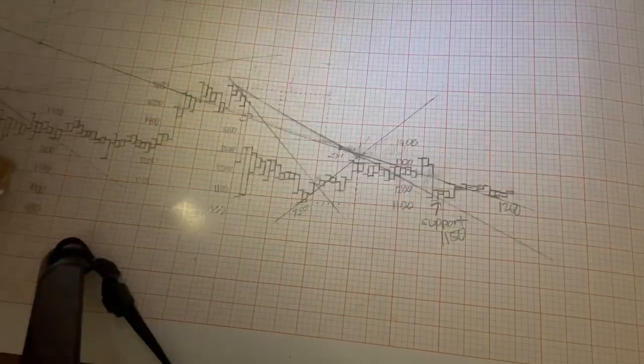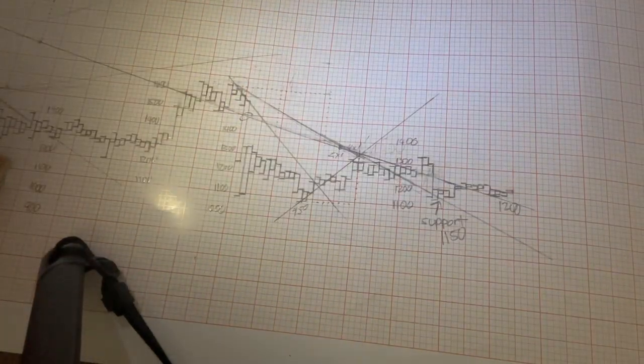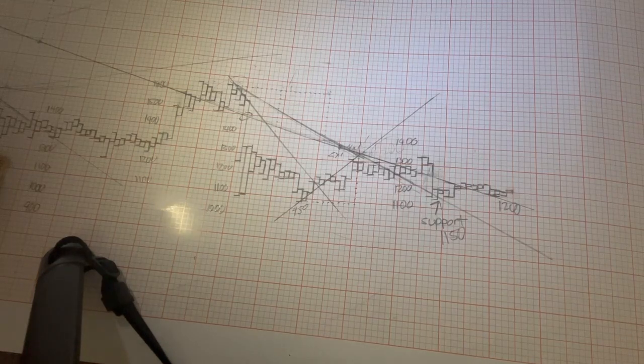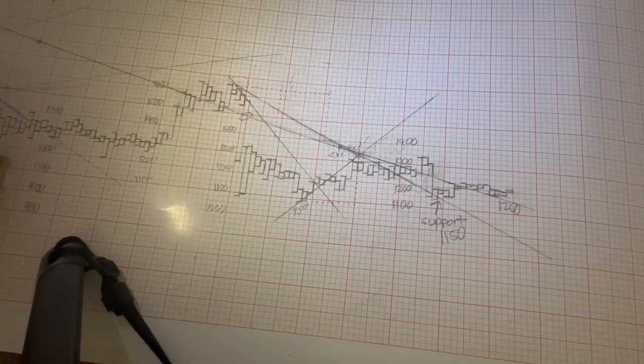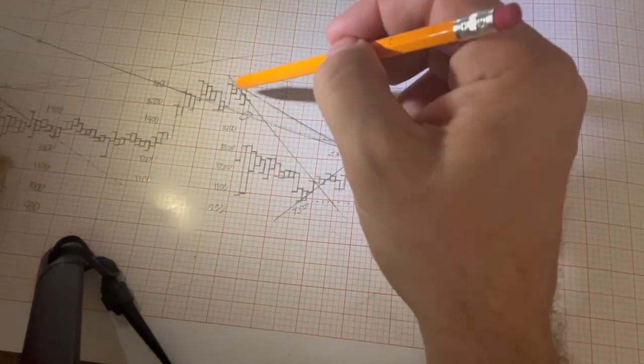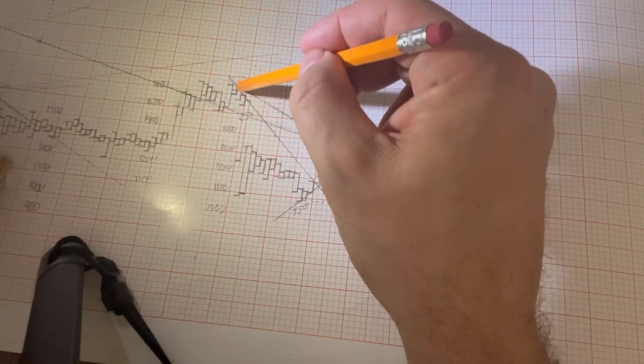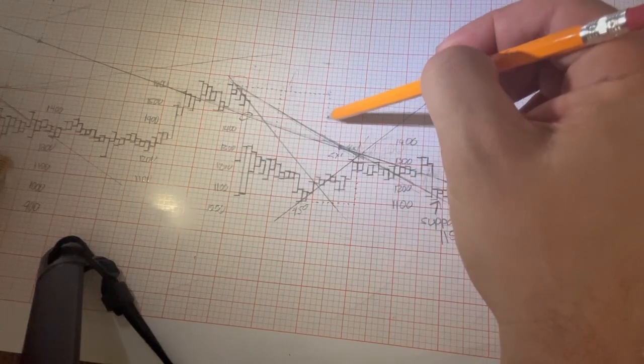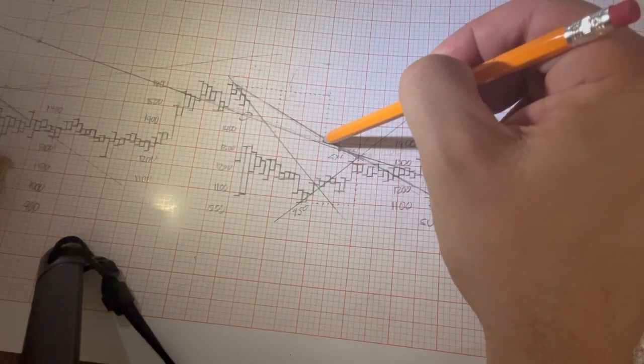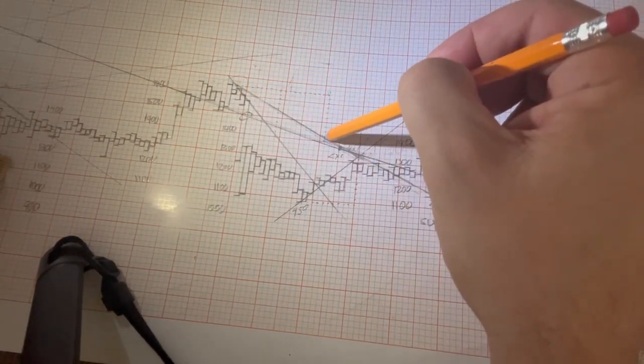Welcome to the Ethereum 2023 hand-kept Gann chart update. Let's start here around $1,700. We drew an angle. I went 20 boxes over and 10 boxes down. That's a 2x1 angle.